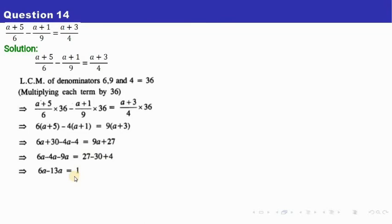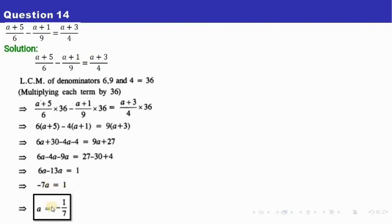Simplifying: 9 plus 4 is 13a with a minus sign. The sign of 6a is plus and the sign of 13a is minus — opposite signs, so subtract: 13 minus 6 is 7, and the bigger number has the negative sign, so we get minus 7a equals 1. Taking the minus to the denominator, a turns out to be minus 1/7. That is your answer for this question.